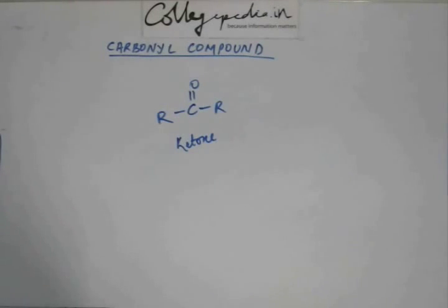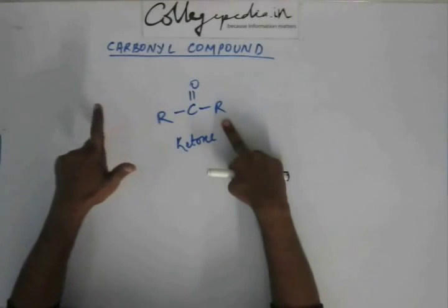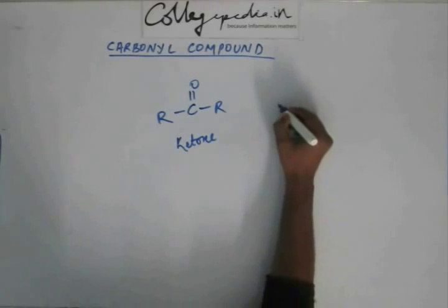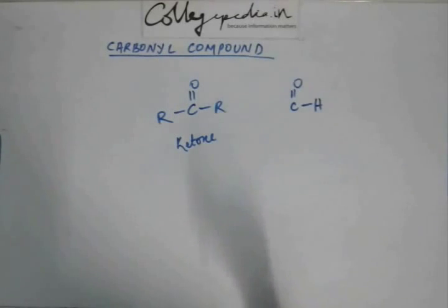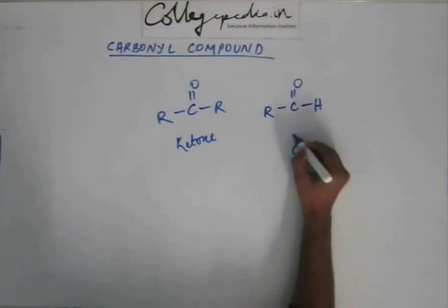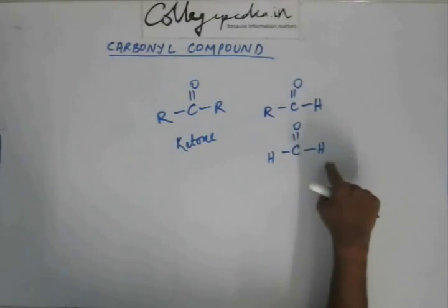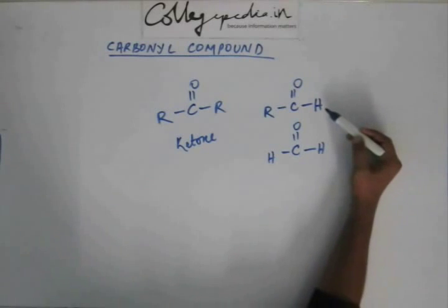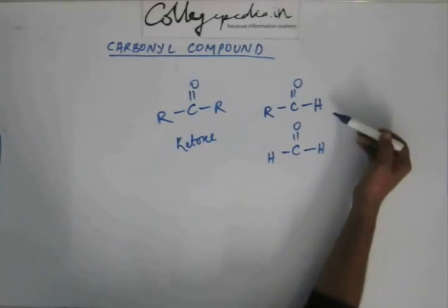A ketone is a carbonyl compound with R groups on both sides of the carbonyl group — it could be open chain, closed chain, cyclic non-aromatic, or cyclic aromatic. There is another possibility: if there is a hydrogen on at least one side of the carbonyl group, with an R group or another hydrogen on the other side, that group is called an aldehyde group and the whole compound is called an aldehyde. Both these structures are aldehydes because there is a hydrogen on at least one side of the carbonyl group.